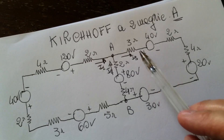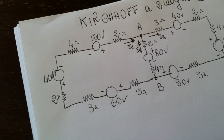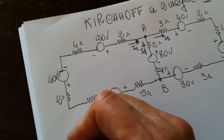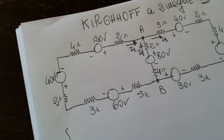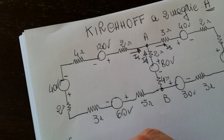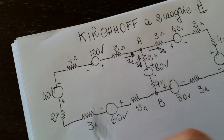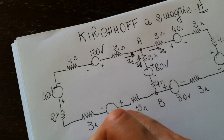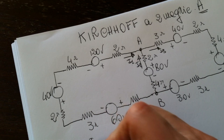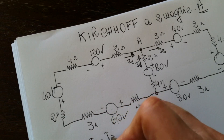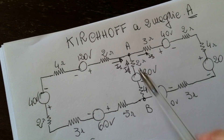We use the first Kirchhoff law. We have to use the first one, and then we're going to complete the other two. So we write the first equation: I1 plus I2 equals I3. The sum of the two currents that flow in is equal to the I3 that flows out.